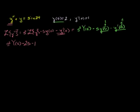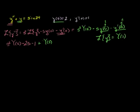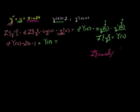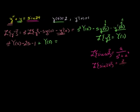Then we take the Laplace transform of y by itself, which is just plus Y(s). This equals the Laplace transform of sine of 2t. The Laplace transform of sine(at) is a over s² plus a². So the Laplace transform of sine(2t), where a is 2, is 2 over s² plus 4. So the right-hand side is 2 over s² plus 4.